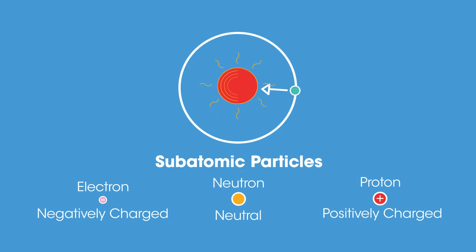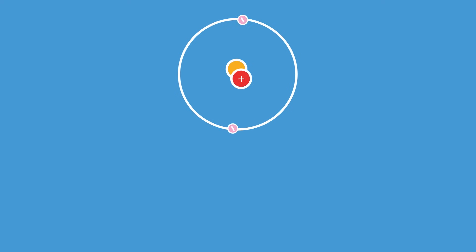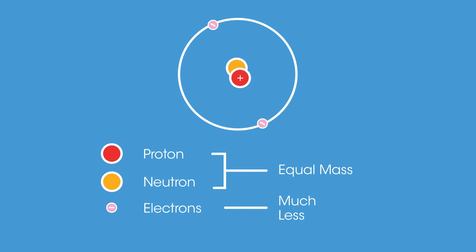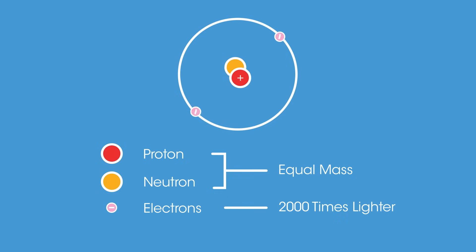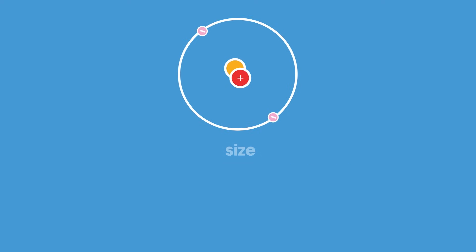So that's the general structure of an atom — what about its mass and size? Protons and neutrons have the same mass, but electrons are so small they weigh almost nothing in comparison. In fact, electrons are around 2,000 times lighter than protons and neutrons. As a result, the mass of an atom is concentrated at its nucleus.